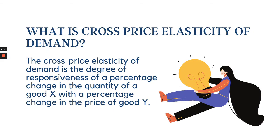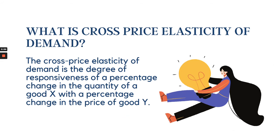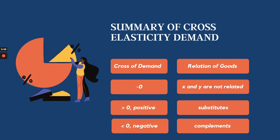In cross price elasticity of demand, we will be comparing two products: product X and product Y. Cross price elasticity is the responsiveness — specifically, the percentage change in the quantity demanded of product X with respect to a percentage change in the price of product Y.